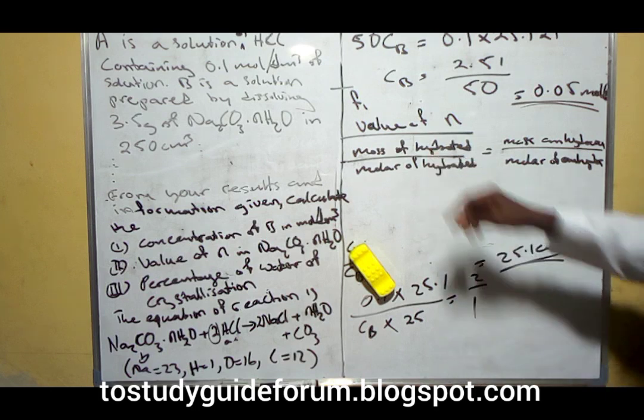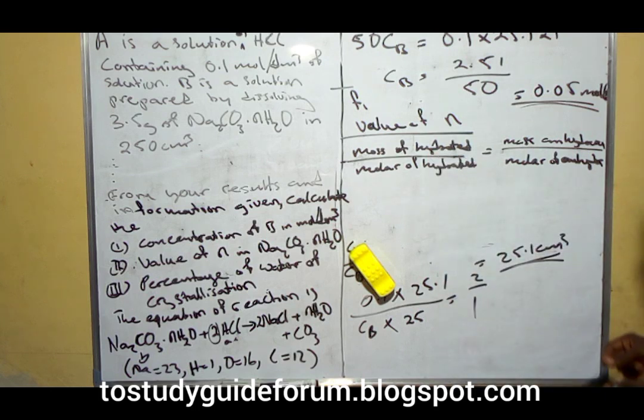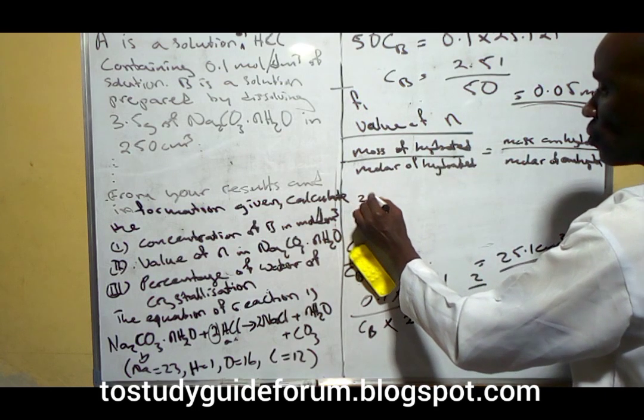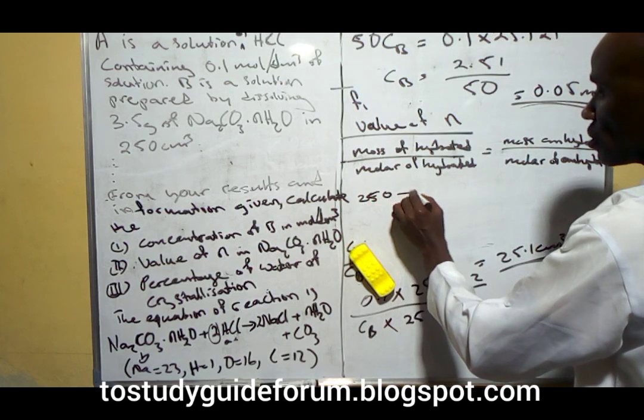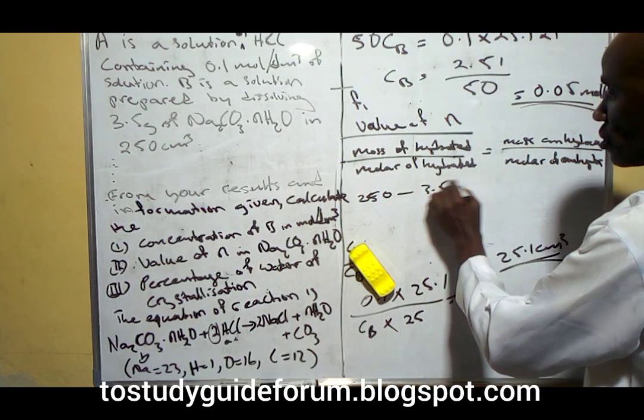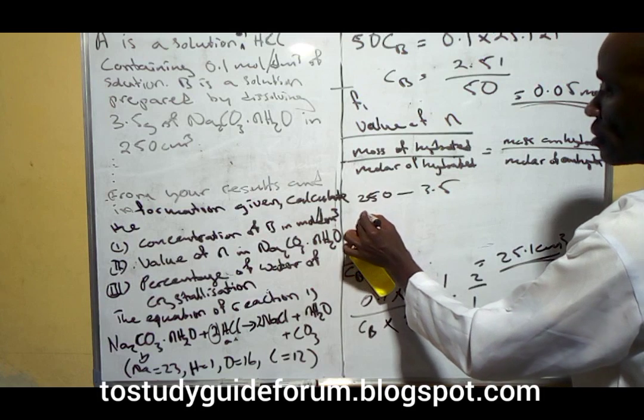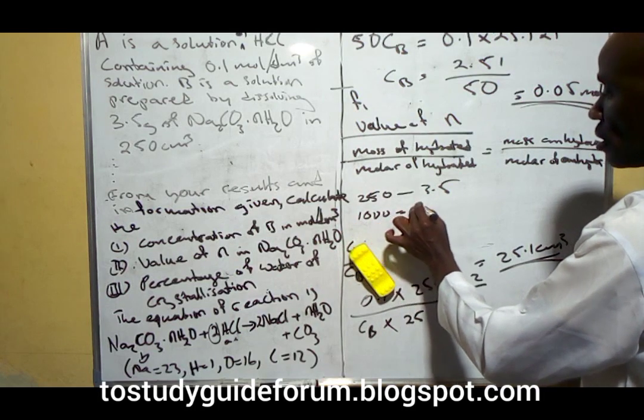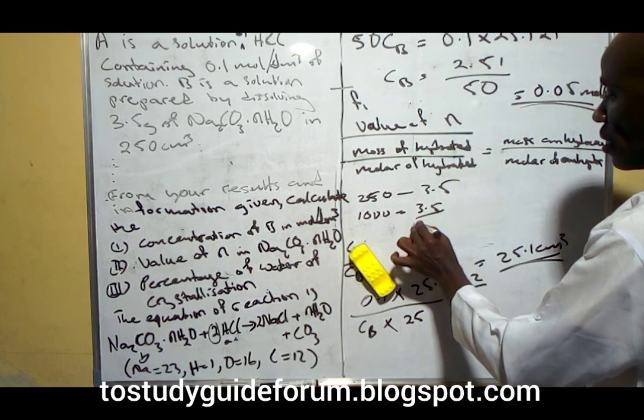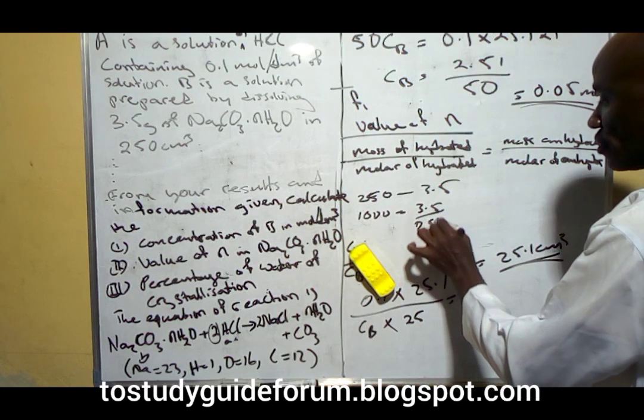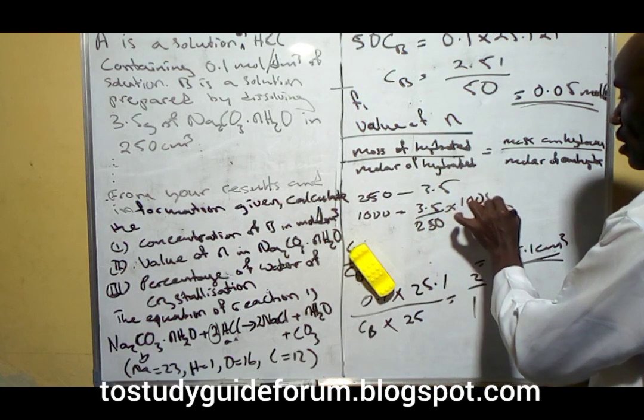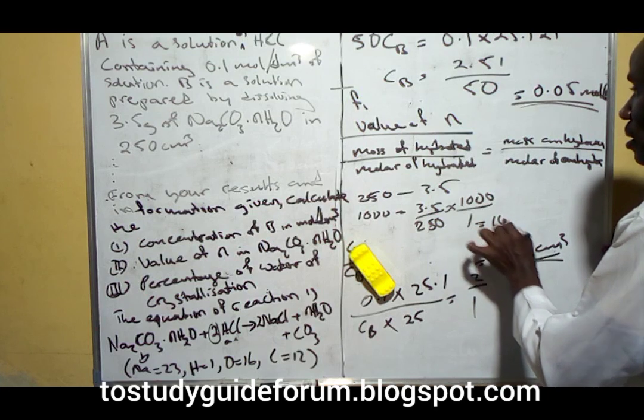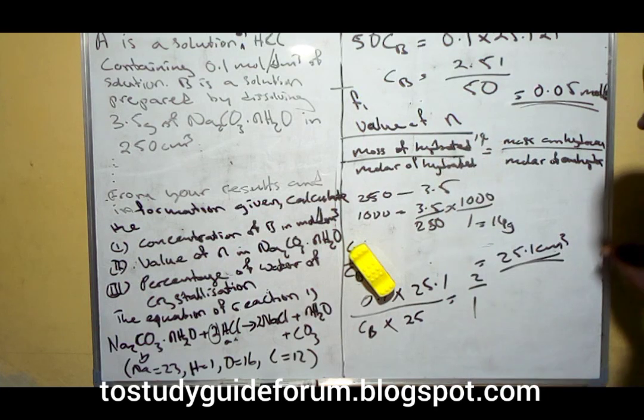To find the mass of this, you know that 250 cm³ contains 3.5 grams, then 1000 cm³ will be 3.5 over 250 times 1000, which equals 14 grams. That is the mass of the hydrated salt.